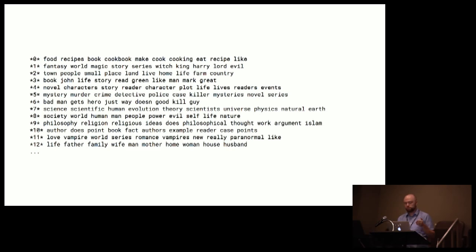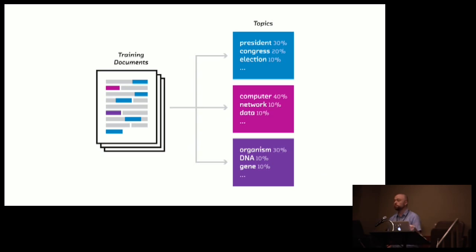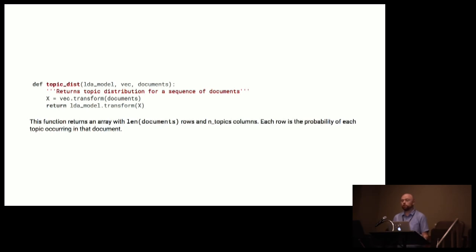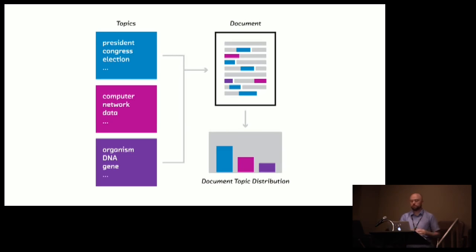We've solved the first piece of the puzzle: getting from a corpus of documents to a topic distribution. Those topics are the lens through which we'll look at future documents — rather than bag-of-words, we'll express documents as a combination of topics (50% politics, 30% computers, 20% genetics). The second piece is easy now we've fitted the model: run the LDA object's transform on a document, and it returns a matrix with documents as rows and topics as columns, where each row adds up to one. If a document is dominated by politics, the politics column will be large for that row.